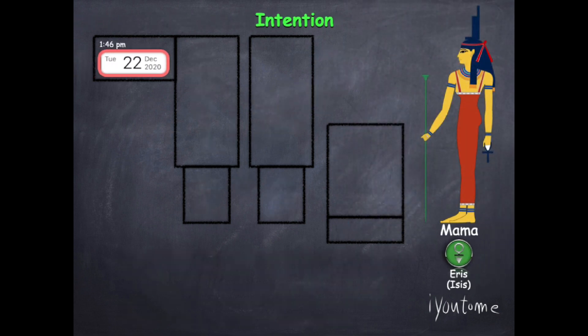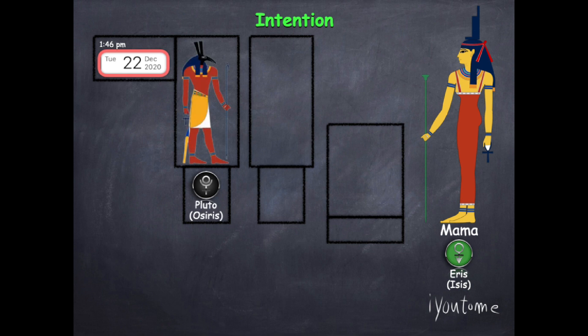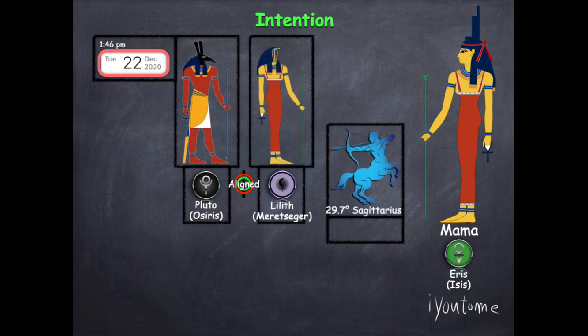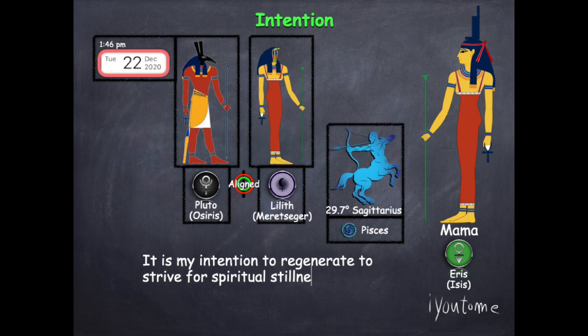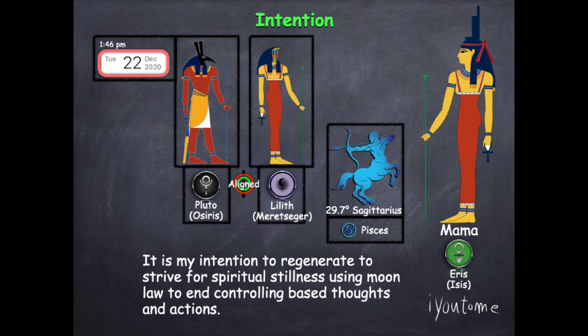The third alignment happens on December 22nd at 1:46 PM Eastern Standard Time. It is between Pluto regeneration of the subconscious mind which aligns with Lilith the spiritual stillness energies in Sagittarius the river of heaven in the sub harmonic of Pisces end of cycles. This is my intention: It is my intention to regenerate to strive for spiritual stillness using moon law to end controlling based thoughts and actions.